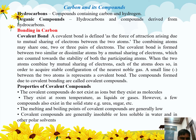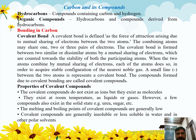When a covalent bond is formed with a single electron pair shared, it is called a single covalent bond. When two electron pairs are shared between two atoms, it is called a double bond, and when three electron pairs are shared, it is called a triple bond.